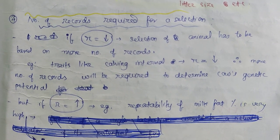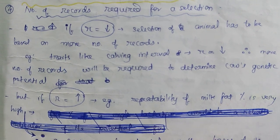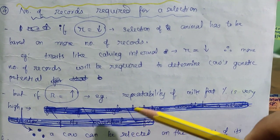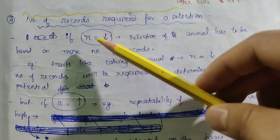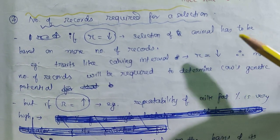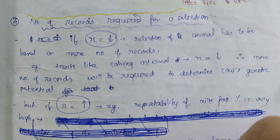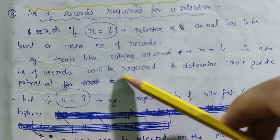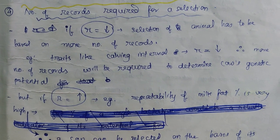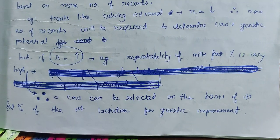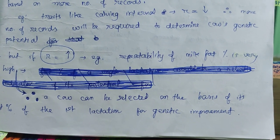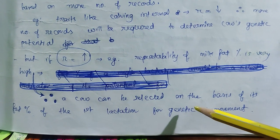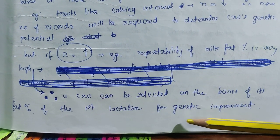The fourth usefulness is determining the number of records required for selection. If repeatability is low, selection of an animal has to be based on more number of records. For example, calving interval has low repeatability, so more records are required to determine a cow's genetic potential. But if repeatability is high — for example, milk fat percentage — a cow can be selected on the basis of its fat percentage from the first lactation for genetic improvement.